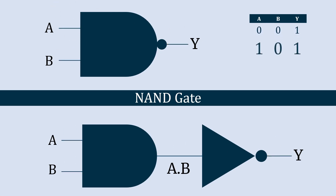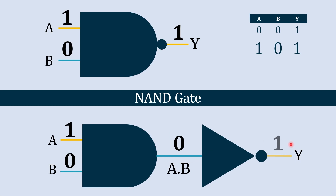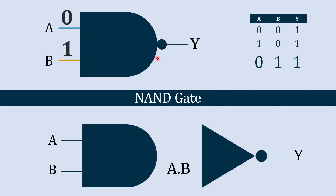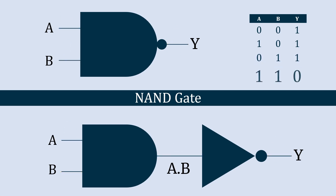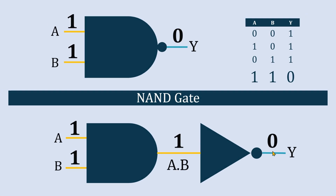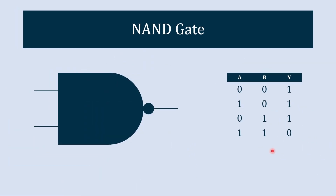When A is 0 and B is 1, the output remains 1 for the same reason. But when both inputs are 1, the AND operation gives 1, and the NOT gate inverts it — so the final output is 0. This is the first universal gate, the NAND gate.